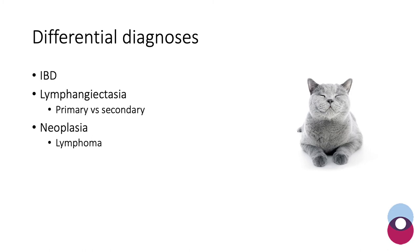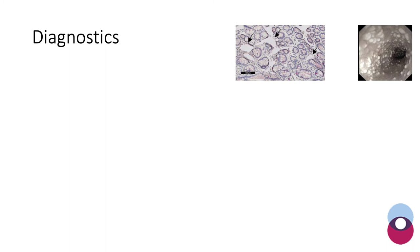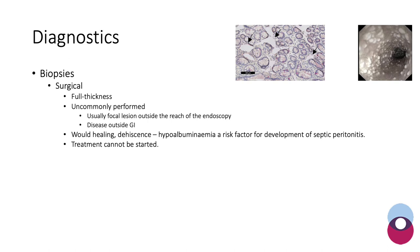Having done all those investigations without a definitive diagnosis, that leaves us with three primary differentials: inflammatory bowel disease, lymphangiectasia, and neoplasia. To further differentiate between them, biopsies are necessary.